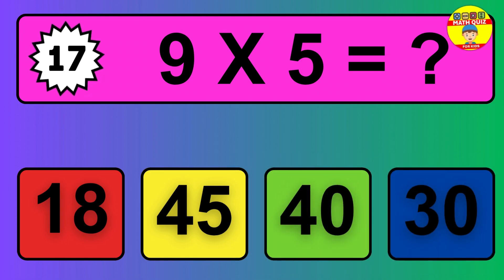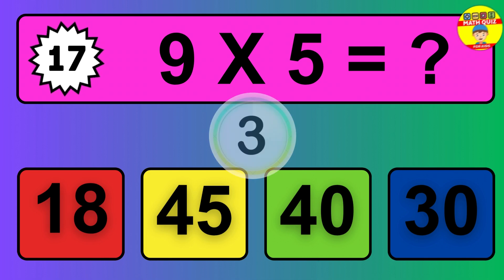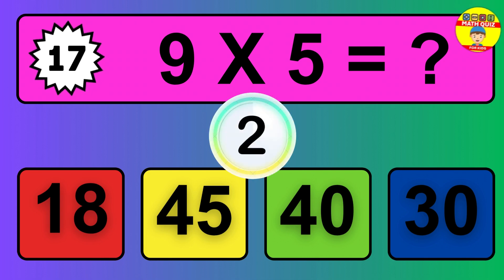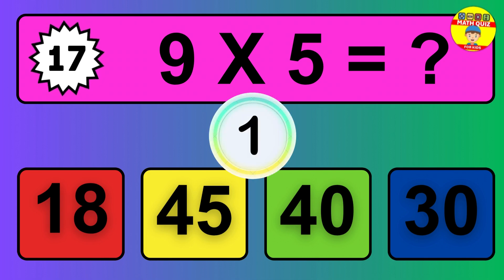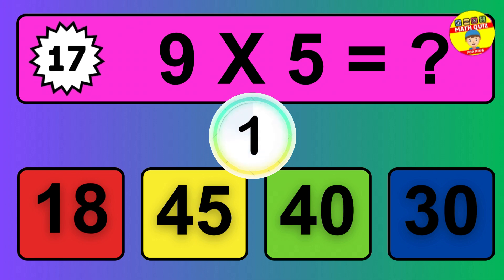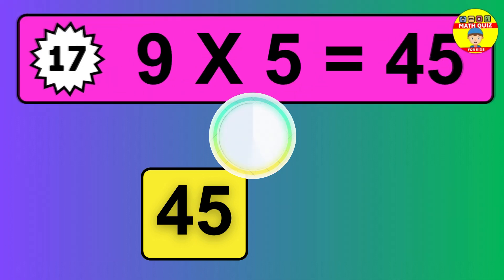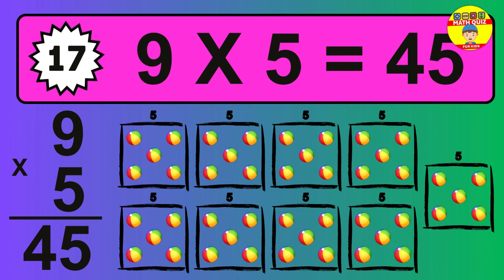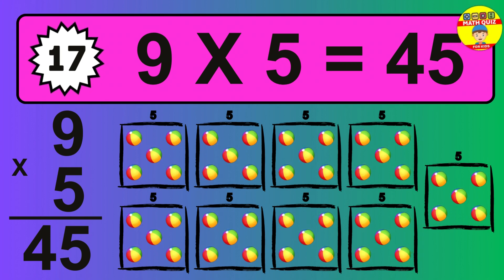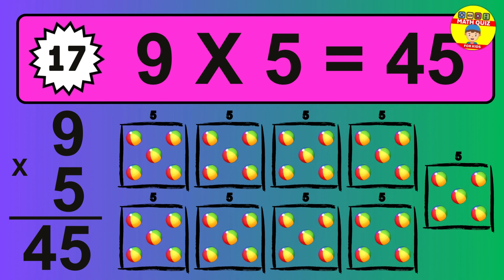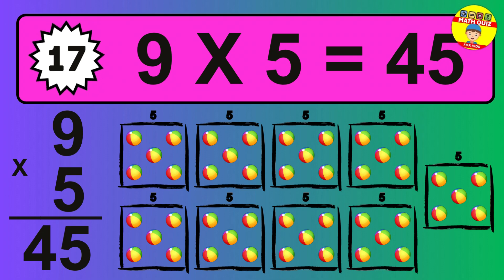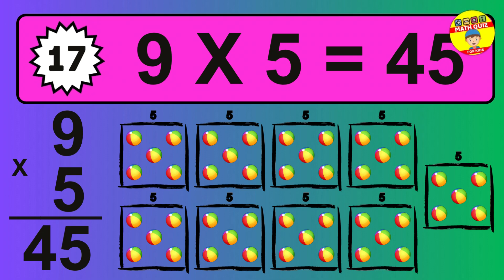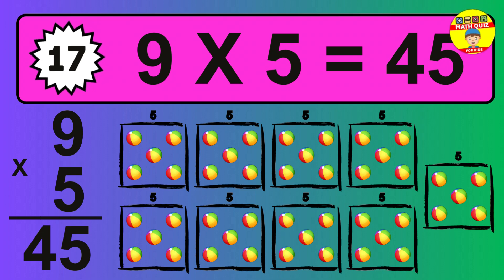Question 17. Nine times five equals what? The answer is nine times five is forty-five. To calculate, we have nine groups with five balls each one. So how many balls do we have? Forty-five balls.